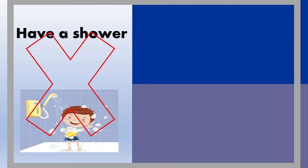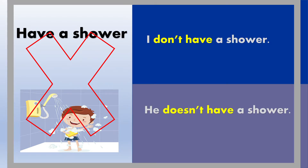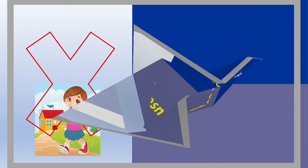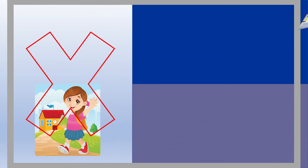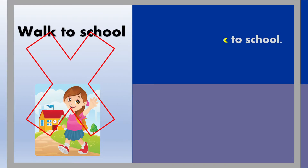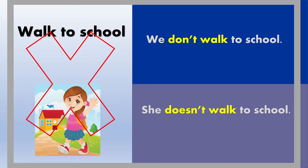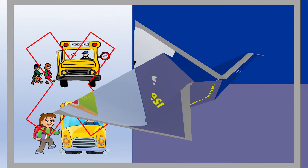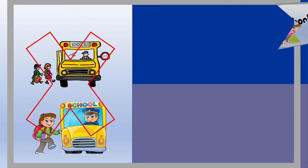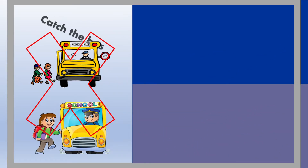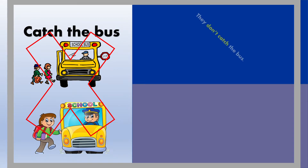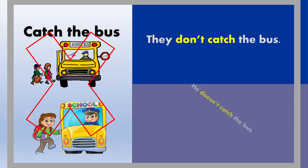Have a shower: I don't have a shower. He doesn't have a shower. Walk to school: We don't walk to school. She doesn't walk to school. Catch the bus: They don't catch the bus. He doesn't catch the bus.